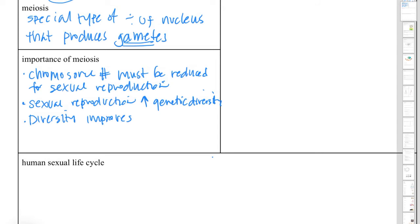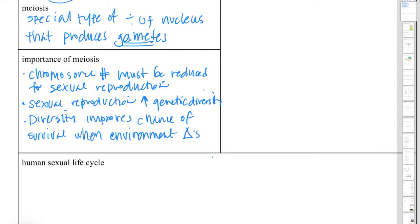Genetic diversity doesn't improve the chances of a single organism surviving — it improves the chance of survival of the species when the environment changes, because no environment is completely stable. Some environments are more stable than others, but none are completely stable.